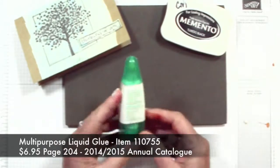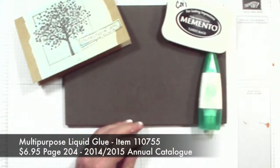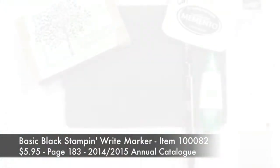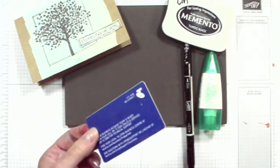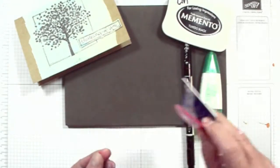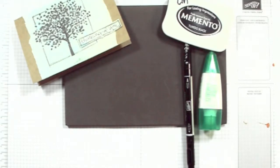We're also going to be using some multi-purpose glue and a Stampin' Write black marker, a credit card or one of these little scraper type things to apply our glue with. And most definitely you'll need some scrap paper when we're working with the glue.